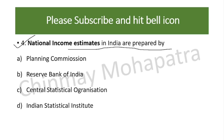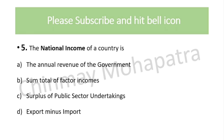Question number four: national income estimates in India are prepared by — the right answer is the Central Statistical Organization (CSO). Question number five: the national income of a country is — the right answer is the sum total of factor incomes.